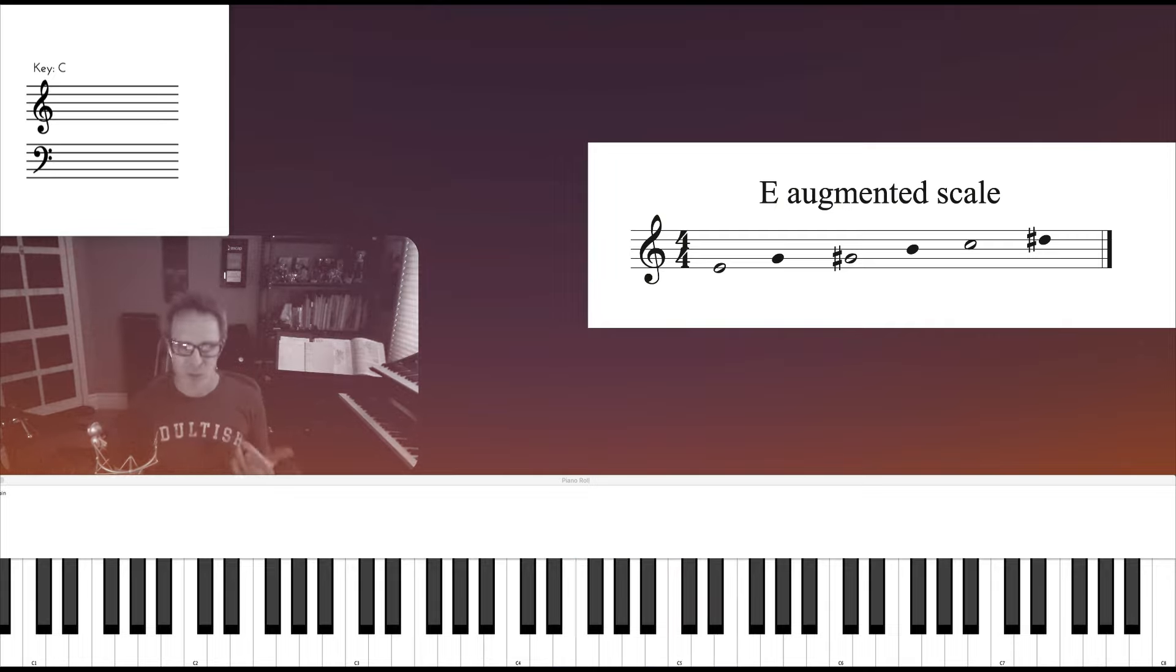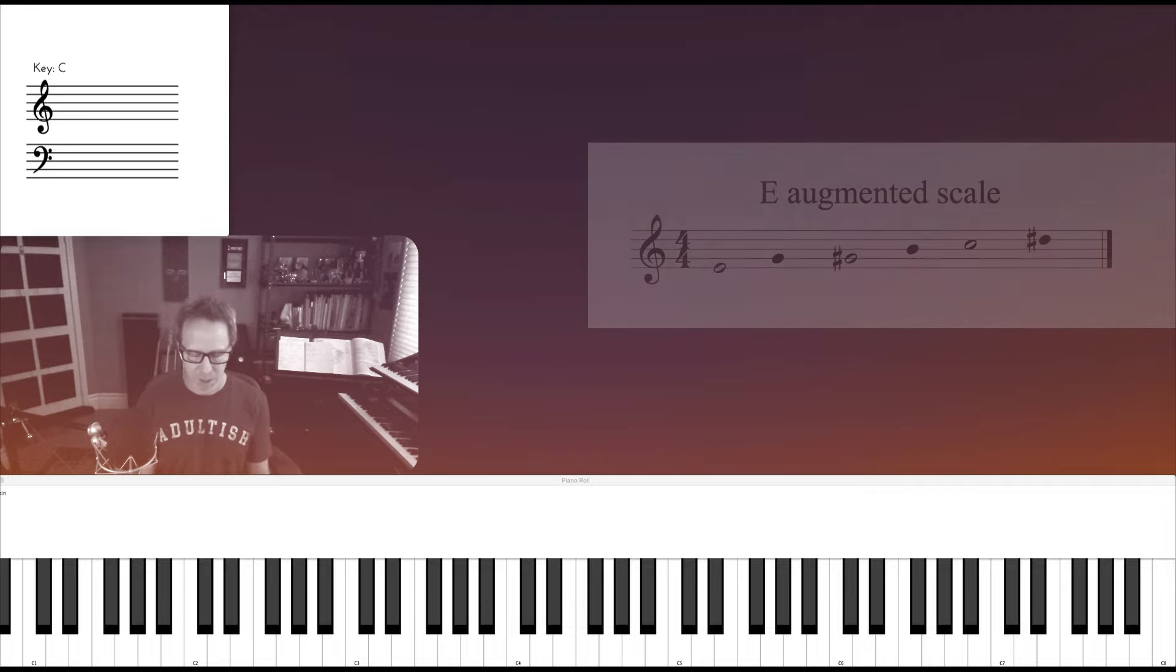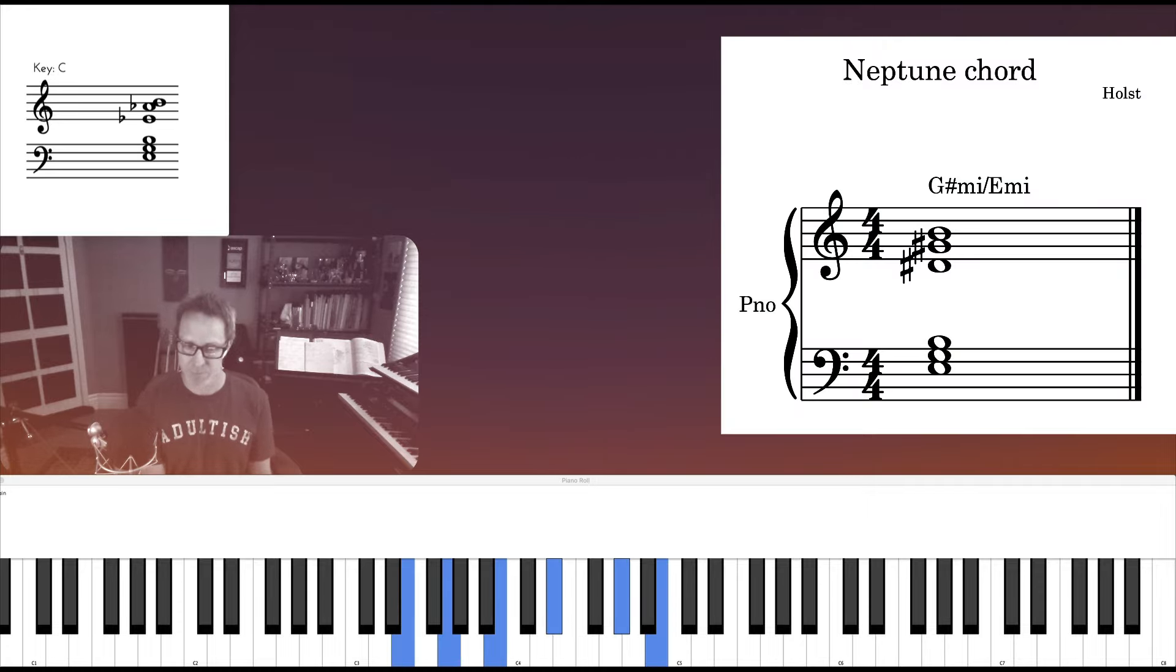From the scale you can derive a bunch of triads including C minor, C major, E minor, E major, G sharp minor, G sharp major. And that's where we find this combination of E minor and G sharp minor.